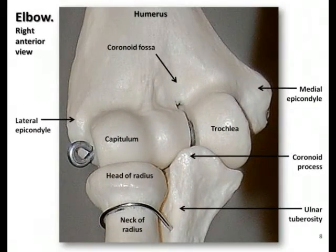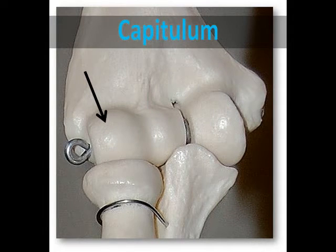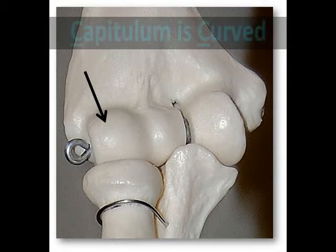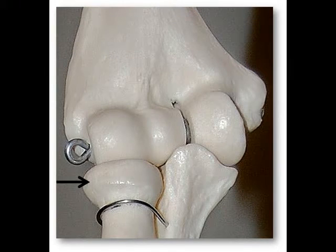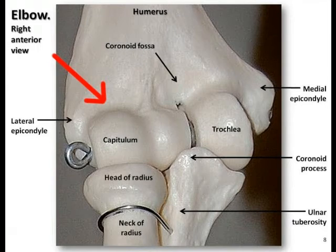We can also find several distinct bony landmarks at the distal end of the humerus. The capitulum is a round, knob-shaped process on the lateral aspect of the bone. Caput means head, and you can remember this part because the capitulum is curved. The capitulum articulates with the head of the radius to allow its rotation. The radial fossa is a shallow anterior depression just above the capitulum, and it articulates with the head of the radius during flexion or bending of the forearm.